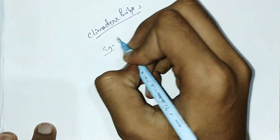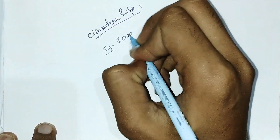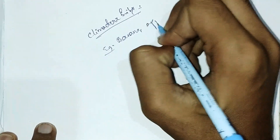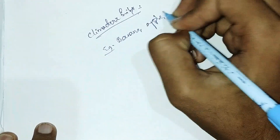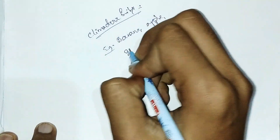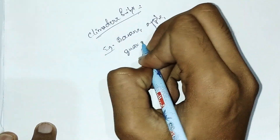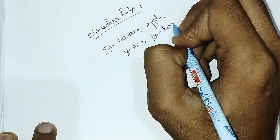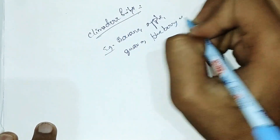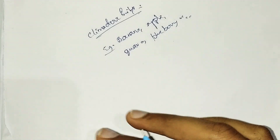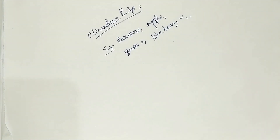Example: banana, apple, guava, blueberry, etc. So these are known as climacteric fruits.